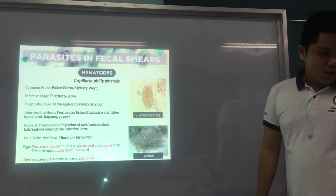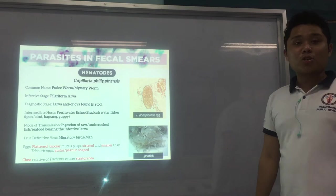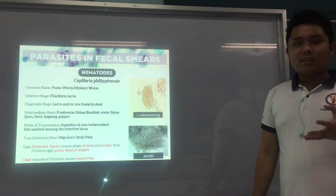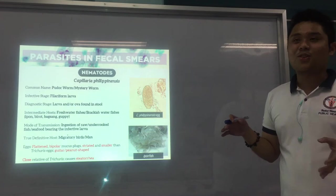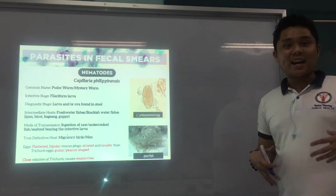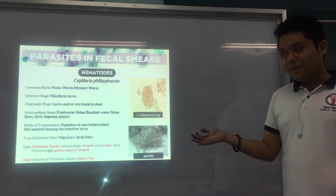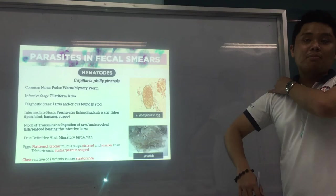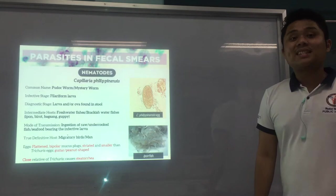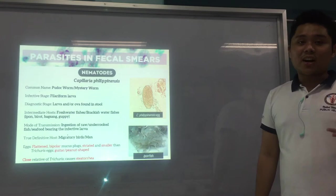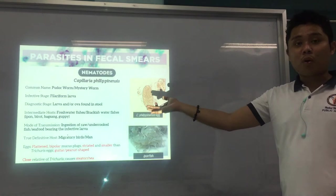It is called the mystery worm because in Ilocos Sur around 1963–1964, there was a disease that threatened the people there with symptoms like diarrhea and abdominal cramps — a gastrointestinal presentation — but no one knew the cause. That's why they called it the mystery disease. After Dr. Nelia P. Salazar discovered Capillaria, it was named the Pudok worm slash mystery worm because it caused the mystery disease.